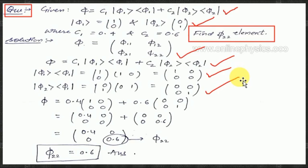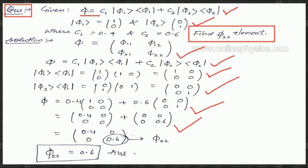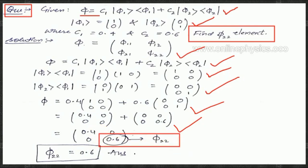Substituting all values, phi becomes 0.4 × [[1, 0], [0, 0]] + 0.6 × [[0, 0], [0, 1]], which equals [[0.4, 0], [0, 0]] + [[0, 0], [0, 0.6]]. Adding these two matrices gives [[0.4, 0], [0, 0.6]]. Comparing with the matrix elements, the value of phi22 is 0.6, which is the correct answer for this question.